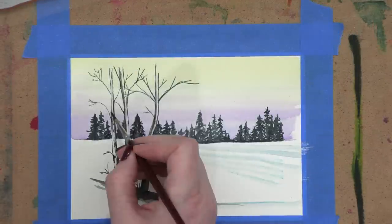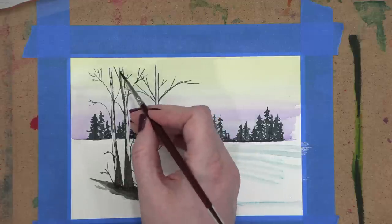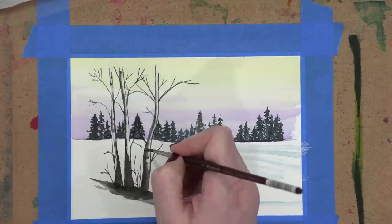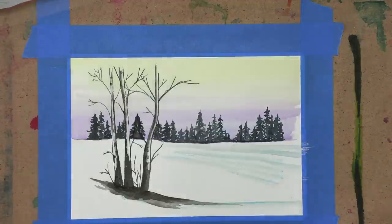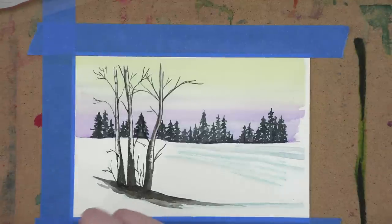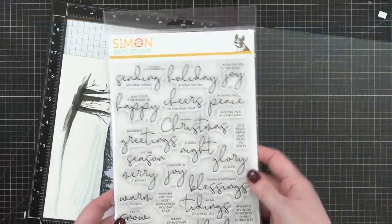I also softened the area of the snow banks off to the right. Then came back with more of that brown shade and added a few more details onto the trees just to make sure everything was finished up. So almost done with all of the painting. I'll add something here at the end here, but I'm going to move on and work on the rest of the card.